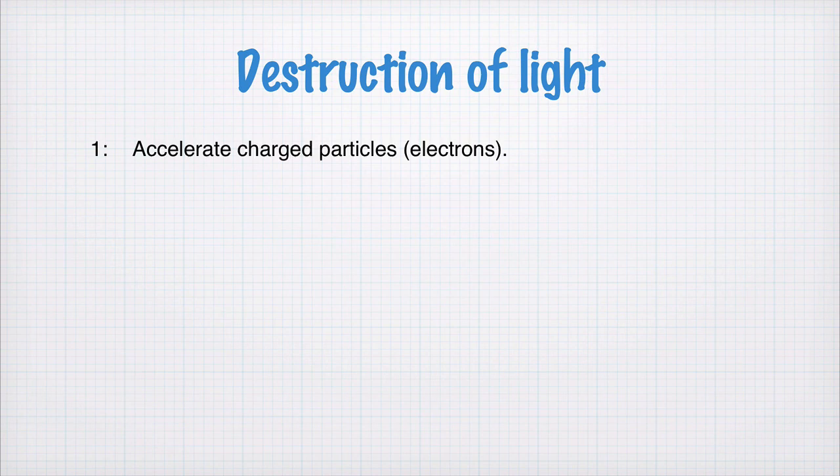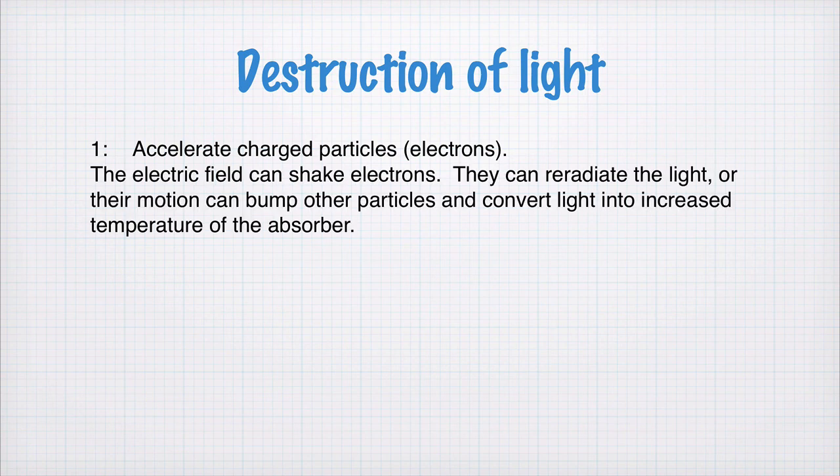Ways of destroying light, it's kind of all the inverse processes of the ways that light are created. So one way would be to use the photons, which contain oscillating electric fields, use these oscillating electric fields to accelerate charged particles. And that means you're doing work on these charged particles to accelerate them up and down, and that absorbs the energy of the electromagnetic waves, or the photons. So the electric field shakes the electrons,